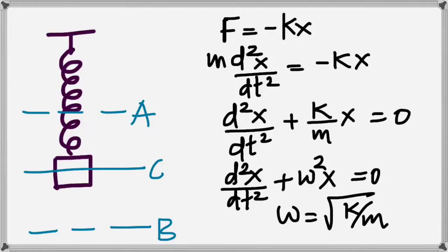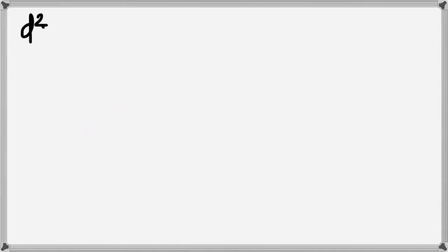How do you find time period from omega? Time period is the time taken for one oscillation — the time to go from A to B and back to A. The relation between period and omega is T = 2π/ω. So I'm going to get the formula for time period from that.